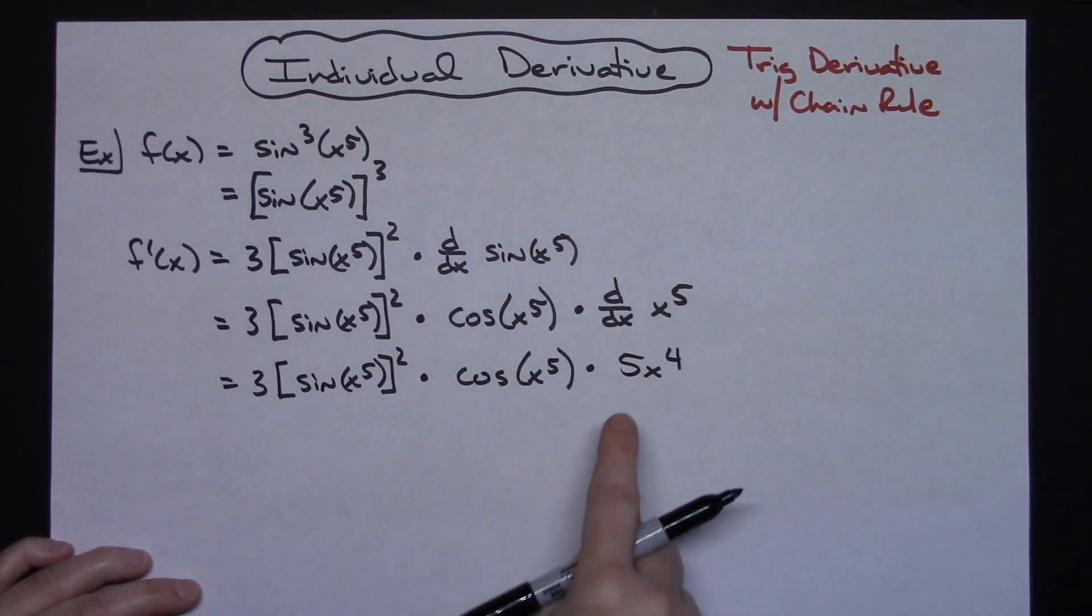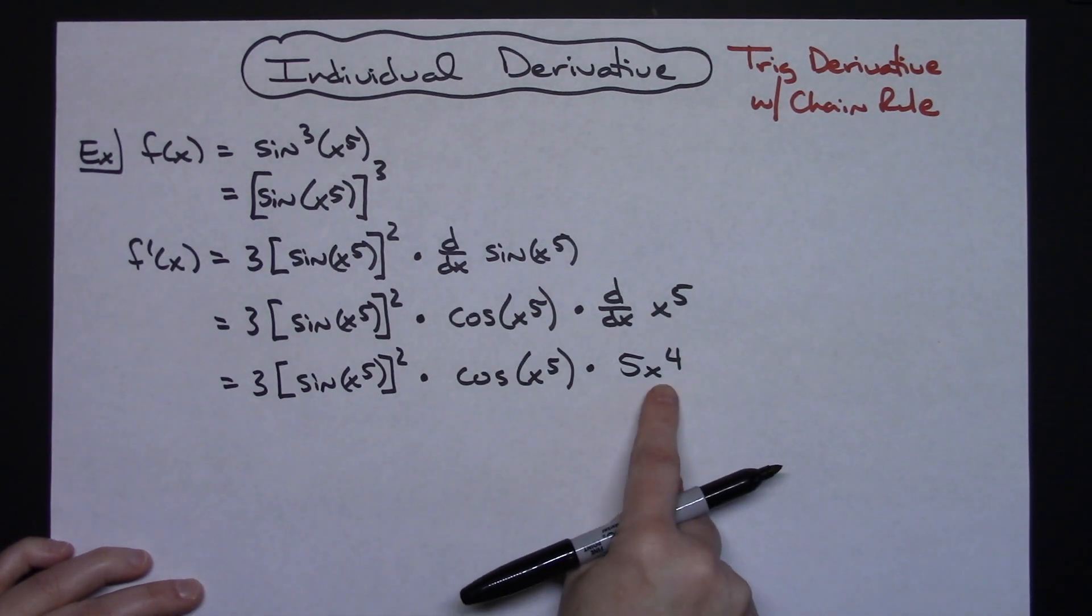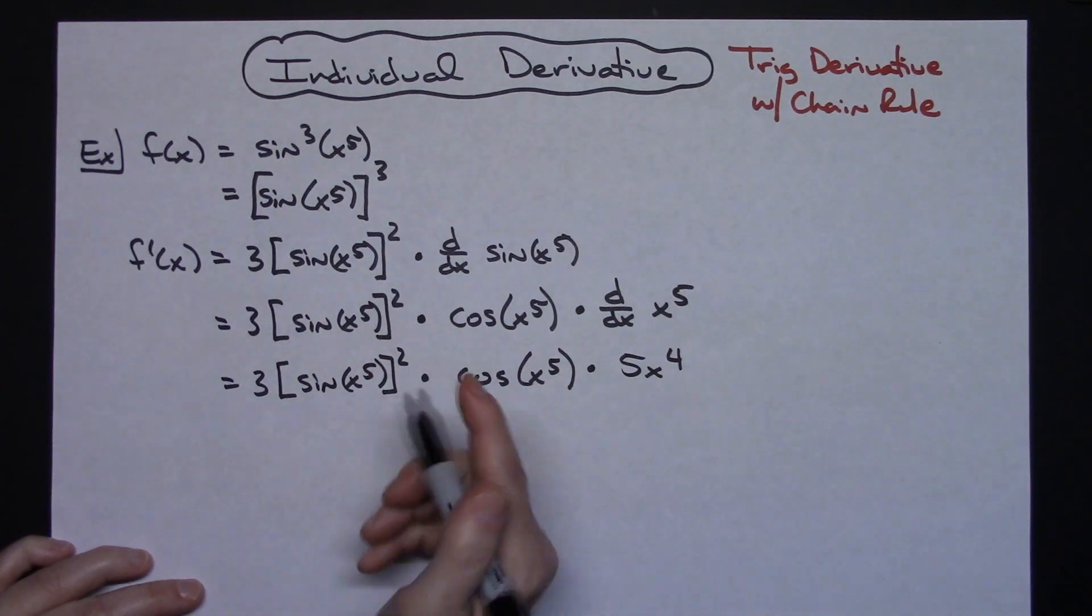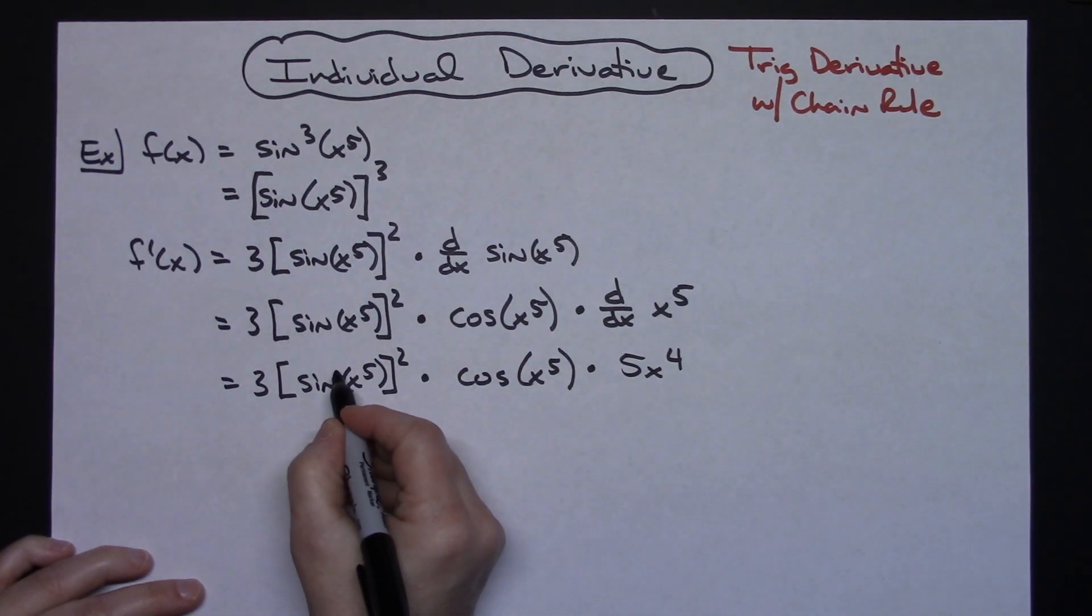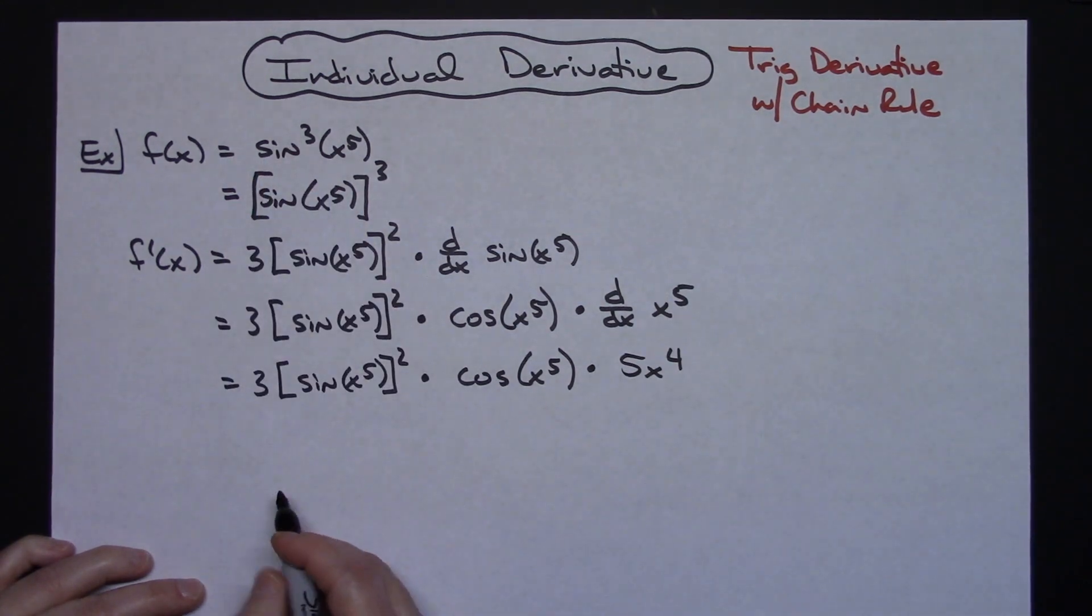Final answer I'm going to want to clean up so all coefficients are going to want to come out in front. I'm going to go ahead and pull the x to the fourth out as well. And then I'm probably going to put this two back in here where the sine is so that it's kind of in the original format that the original question was in.